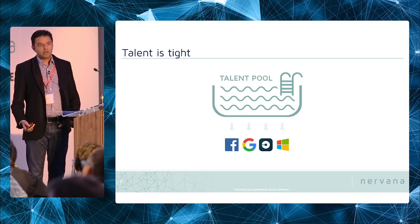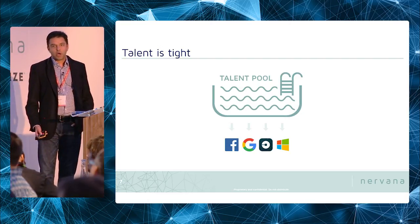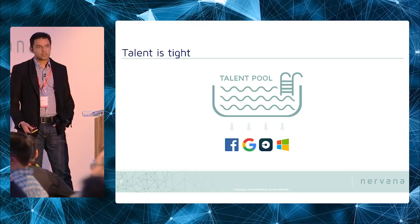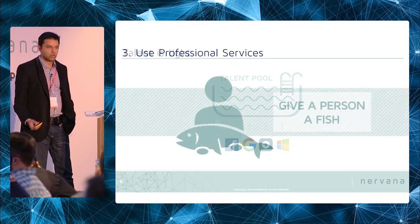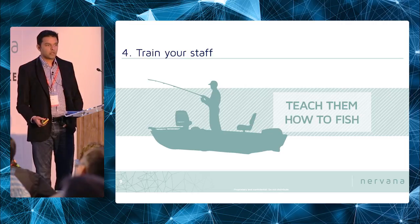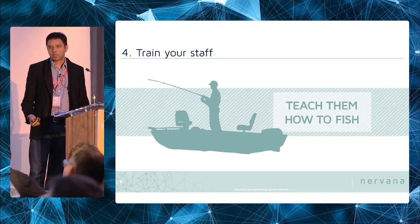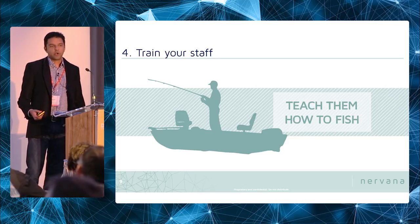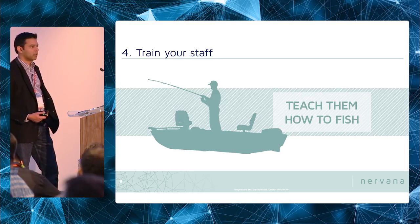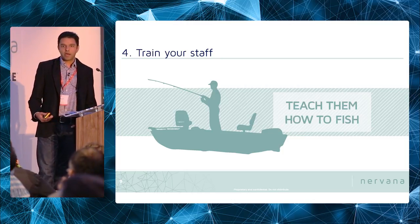Another thing we hear about a lot is that talent is really tight. All the deep learning talent is getting absorbed by the big companies in the space. So how do you, as an enterprise customer or a startup, go about building your talent? There are a couple of options: you can use professional services from companies like ours or others. You can also train your staff — there's a lot of talent in adjacent areas like traditional machine learning, computational neuroscience, computational physics, or even software engineering. With the right training, they can pick up what's needed to be successful.